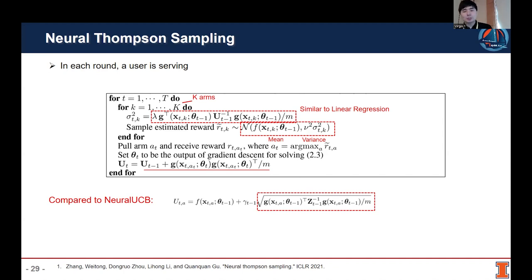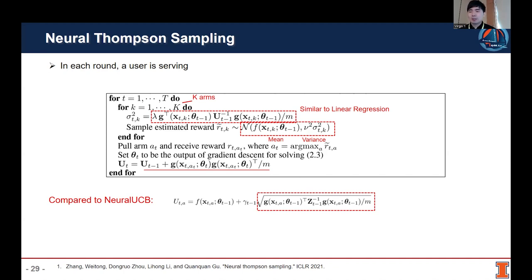Compared to Neural UCB, Neural Thompson Sampling shares very strong similarities. Neural Thompson Sampling transforms the Neural UCB framework into a normal distribution where the mean is the neural network prediction and the variance is the confidence interval used in Neural UCB. They share a similar idea, but Neural Thompson Sampling incorporates more exploration because it samples the reward from the normal distribution, which contains more uncertainty.